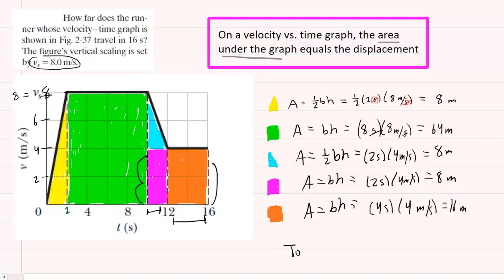Now to get the total displacement, we simply add the individual displacements we obtained along the way. And when you add all five numbers together, you would get exactly 100 meters. So this would be the correct answer to the question.